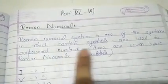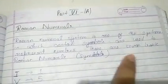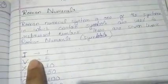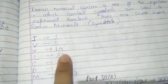Roman numerals system is one of the systems in which certain symbols are used to represent numbers. There are seven basic Roman numerals: I represents 1, V represents 5, X represents 10, L represents 50, C represents 100, D represents 500, and M represents 1000.